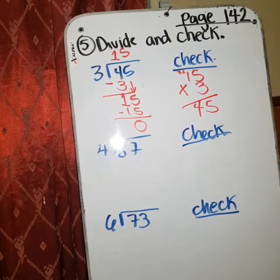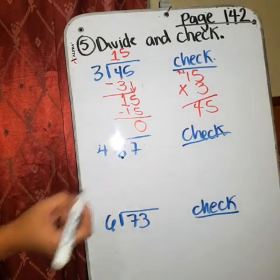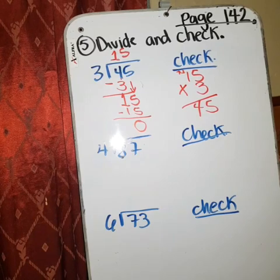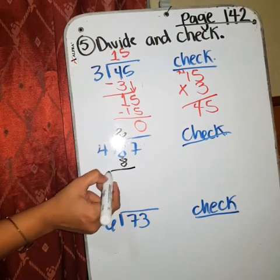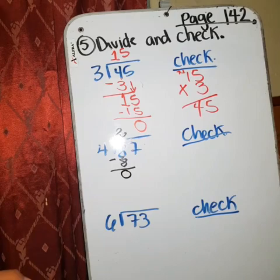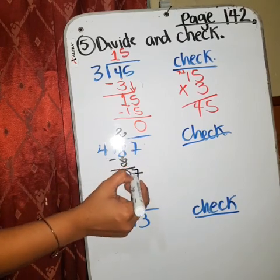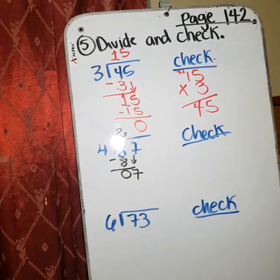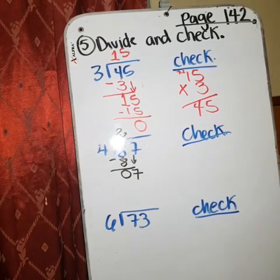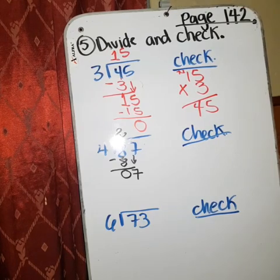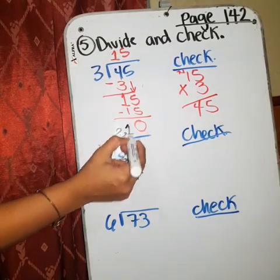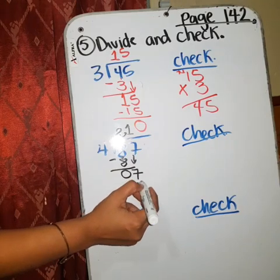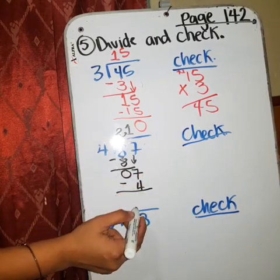Now, the next exercise. Eighty-seven divided by four. We're going to work with this first. Give me a number in the table of four that gives you eight. Two, right? Two times four? Eight. Eight minus eight? Zero. Now, bring down the number seven. Vamos a bajar el número siete. How many groups of four can I make with seven objects? ¿Cuántos grupos de cuatro puedo hacer con siete objetos? Only one. One times four? Four, right? Seven minus four? Three.